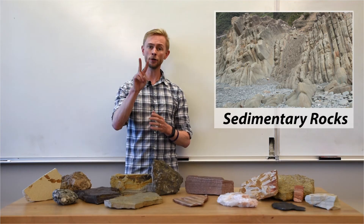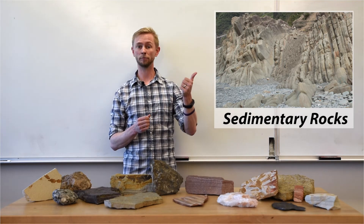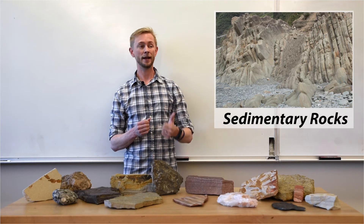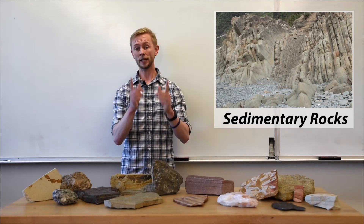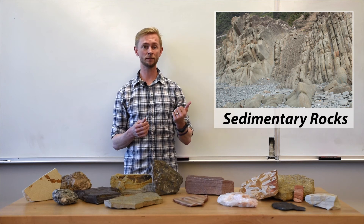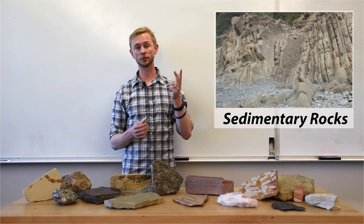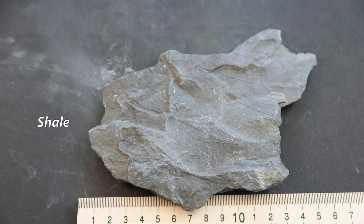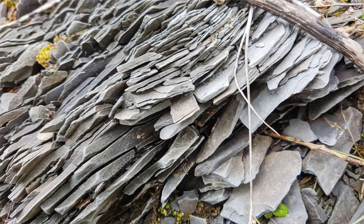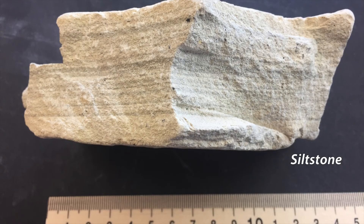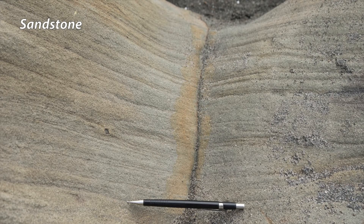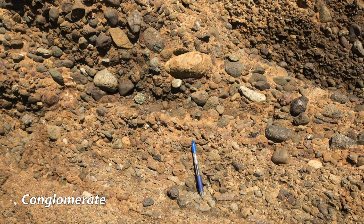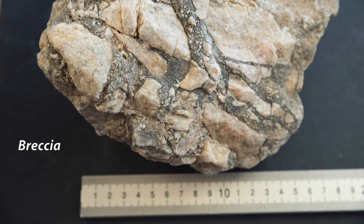Sedimentary rocks can be divided into two main categories: clastic, being composed of other rock fragments cemented together, and chemical or biologic, being composed of minerals precipitated by chemical or biologic processes. Clastic sedimentary rocks are classified by the size of the clasts composing the rock, their shape, and their sorting. Rocks made of clay-sized particles cemented together into thin laminations are shales or mudstones. Rocks composed of silt-sized particles are creatively named siltstones. Well-sorted grains of sand all cemented together form, you guessed it, sandstone. Poorly-sorted, rounded clasts cemented together form a conglomerate. And a rock composed of poorly-sorted, angular clasts is a breccia.